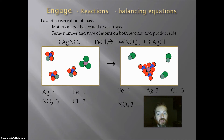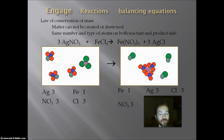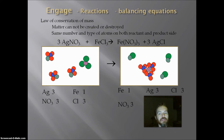So now if I look at my reaction, all together there are three silvers, both sides have three nitrates — which means three nitrogen and nine oxygen on each side — both sides have one iron and three chlorine. So the law of conservation of mass is now upheld and my reaction balances.